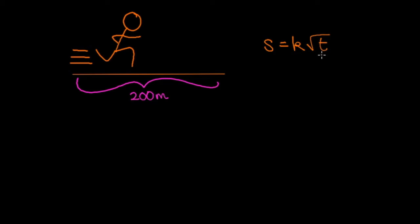A couple of things to begin with. The first is that the runner is traveling with linear motion and so we can model this problem in one dimension. The second is that because we have no indication that acceleration should be constant, in order to find his speed or acceleration at any given time we're going to need to use calculus.